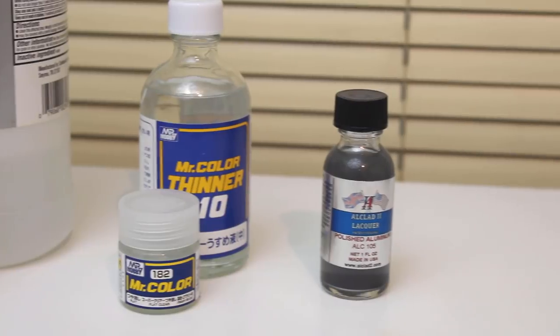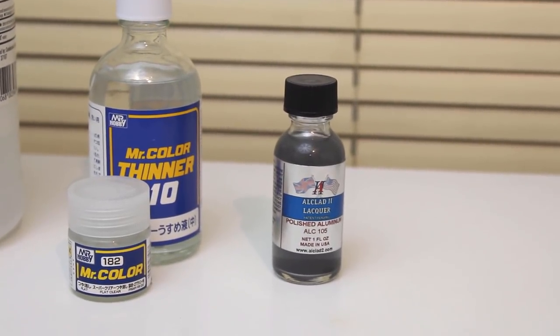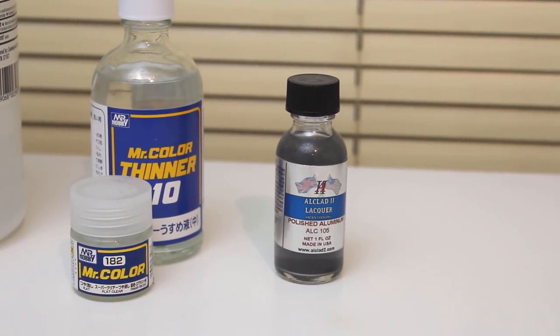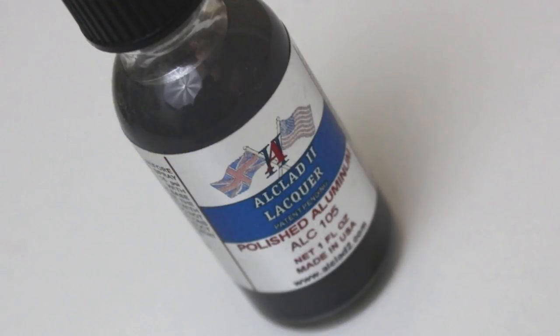Last of all, there are ready-to-use airbrush paints too. These come in a variety of acrylics, enamels, and lacquers like this Alclad. All you have to do is shake them well and pour them directly into your airbrush. They're great for beginners, but they can be limited in color and, like Alclad, they can be cost-prohibitive. This tiny bottle is almost $15.